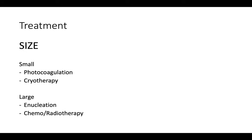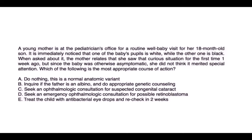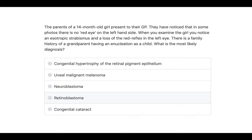Here's a question: a young mother is at the paediatrician's office for a routine well-baby visit for her 18-month-old son. It is immediately noticed that one of the baby's pupils is white while the other is black. The mother relates she first noticed this one week ago but, since the baby was otherwise asymptomatic, didn't think it merited attention. Which of the following is the most appropriate course of action? The correct answer is seeking an emergency ophthalmology consultation for possible retinoblastoma — ideally within 48 hours, or immediately if possible.